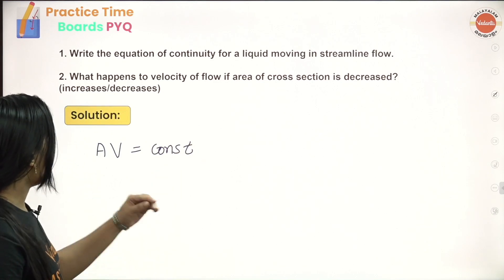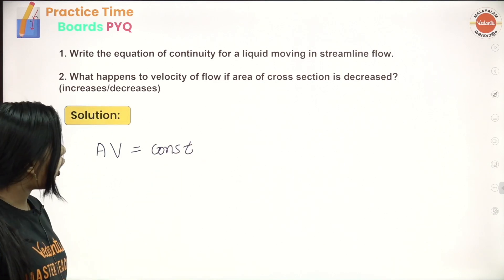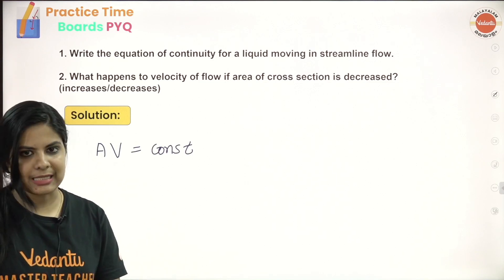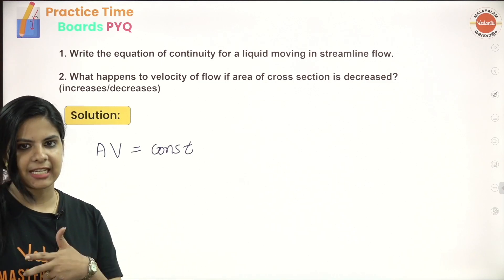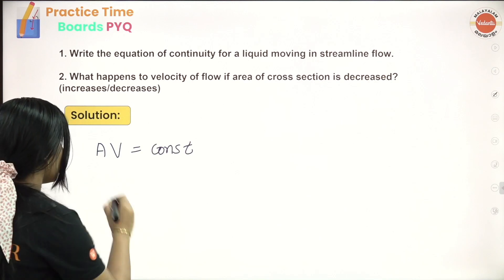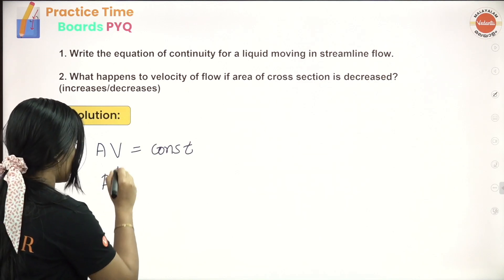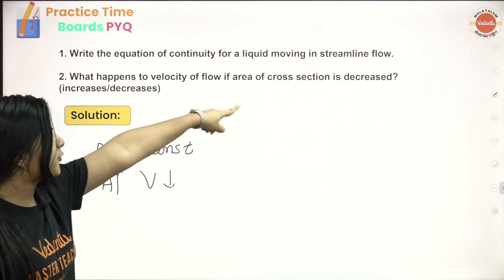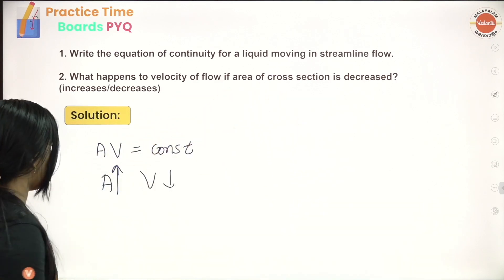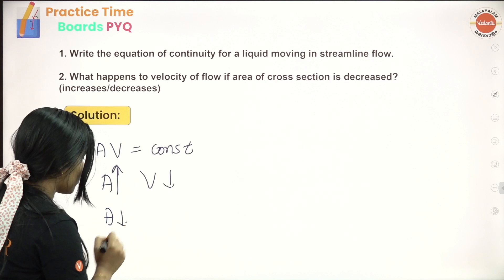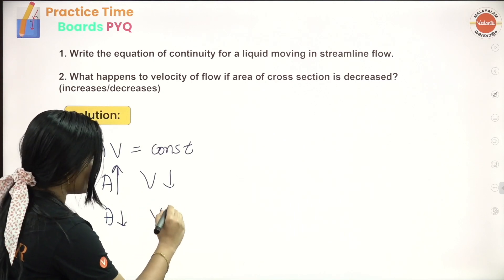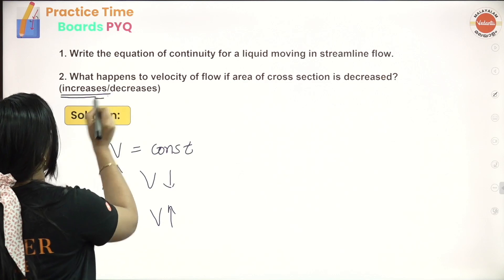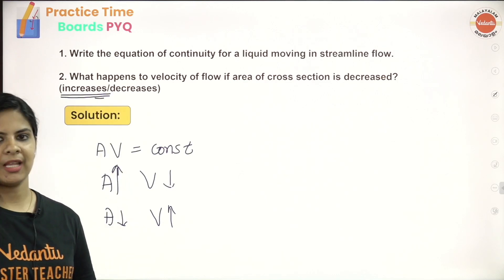What happens to velocity of flow if the area of cross-section is decreased? When area increases, velocity decreases. If area of cross-section is decreased, the velocity of flow increases.